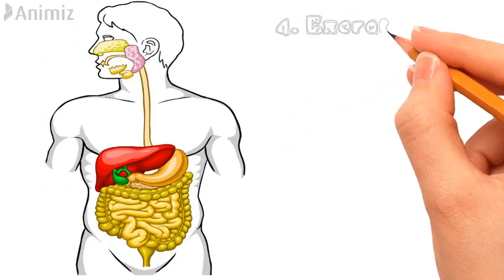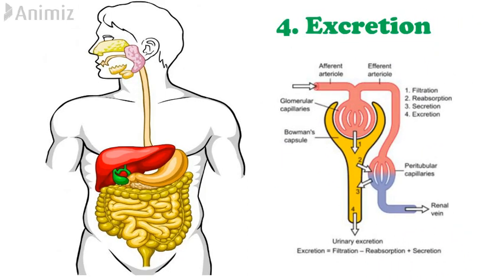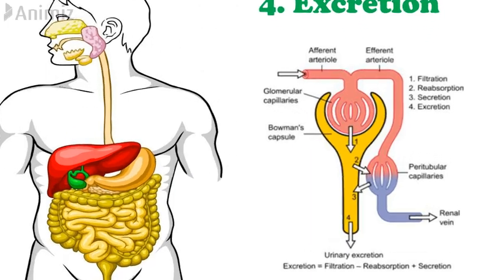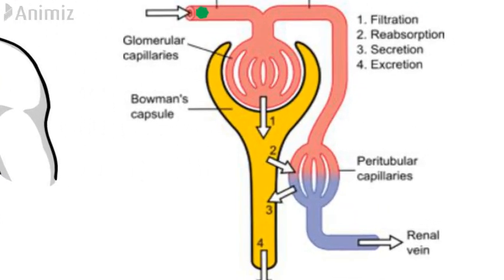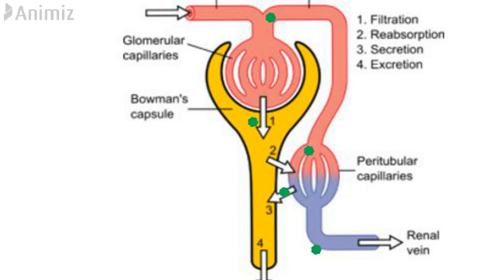The fourth step is the excretion of these inactive metabolites from the body. The major site of excretion is the kidney. These inactive metabolites are filtered from blood vessels into the nephron, where some of the drugs are reabsorbed into the blood vessel, while some are secreted from the blood vessel into the nephron and are finally excreted from the body.